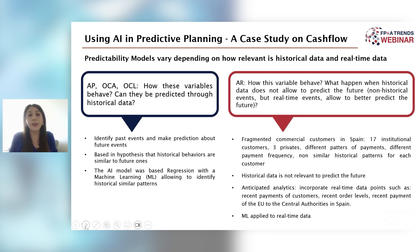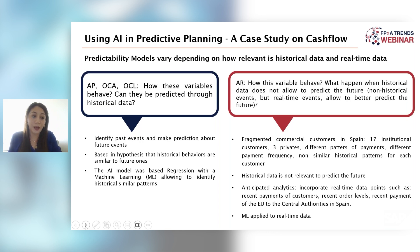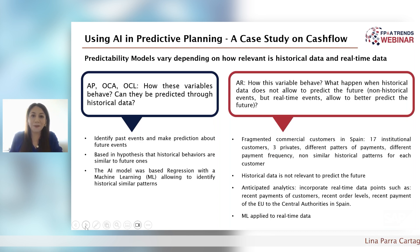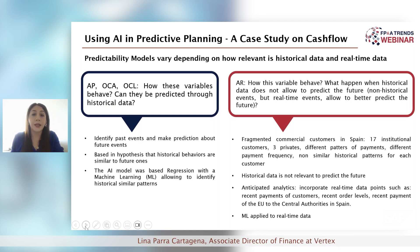If historical data doesn't allow us to predict the future, we turn to what we call anticipated analytics — listing real-time variables relevant to forecasting. In this case, we tracked order levels per customer, how much the EU was injecting into Spain's healthcare system, the frequency of EU fund transfers to the Spanish government, and we built credit ratings for each customer to predict AR and DSO.